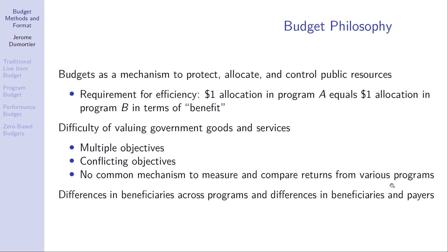If you are thinking about a budget, it is a mechanism to protect, allocate, and control public resources. From an efficiency perspective, you may ask whether $1 allocated to program A equals $1 allocated to program B in terms of benefit. It is difficult to value government goods and services because you may have multiple objectives, conflicting objectives, and there is no common mechanism to measure and compare returns from various programs.